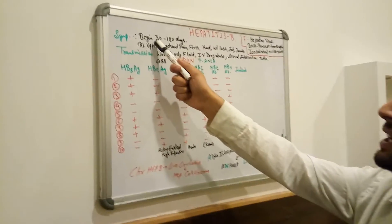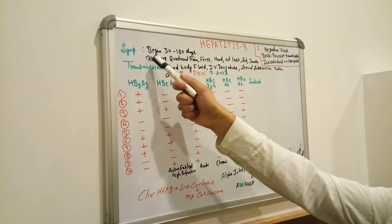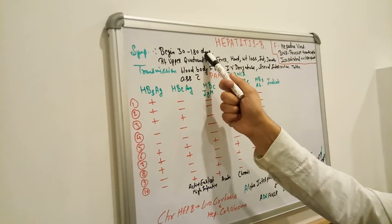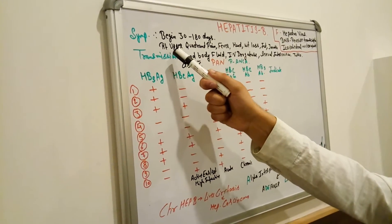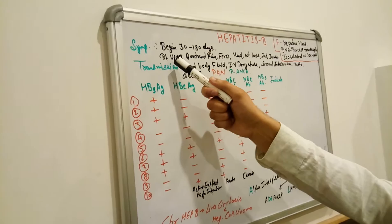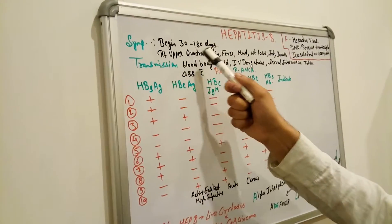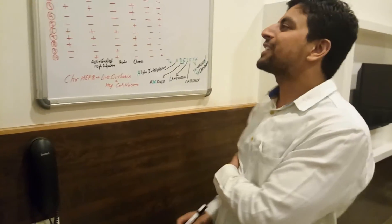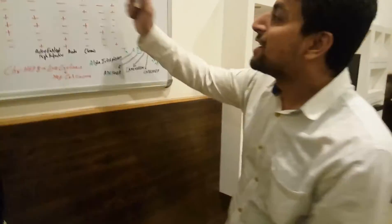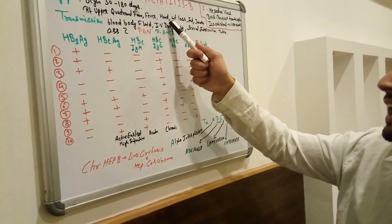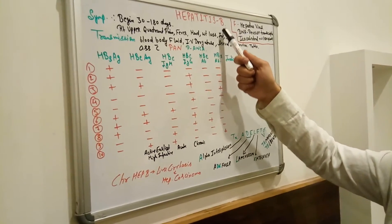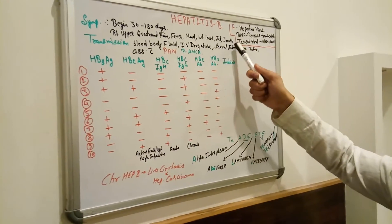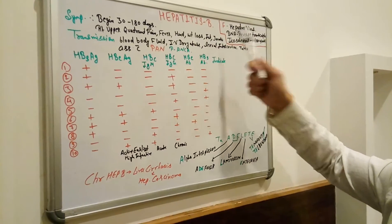Its incubation period ranges from 30 to 180 days. Symptoms of Hepatitis B include right upper quadrant pain — because the liver is located there — along with fever, infection, headache, weight loss, and sometimes joint pain.